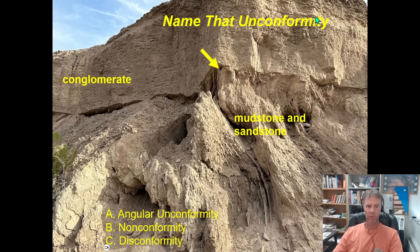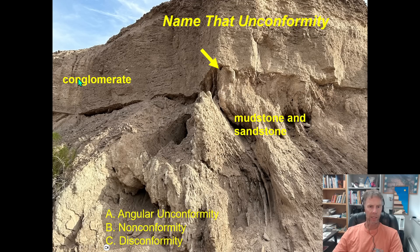Here is our final quiz example. We have mudstone and sandstone below and conglomerate above. The layering in the mudstone and sandstone is quite steep, and it's definitely at an angle to the conglomerate above, which is nearly horizontal or at least gently dipping. So this would be an angular unconformity.